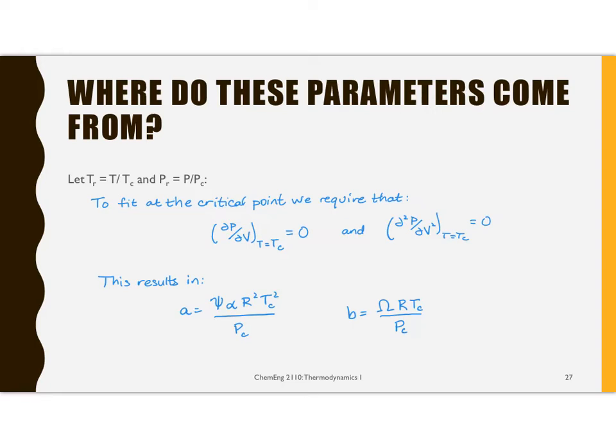And if you do this, if you look at dP/dV when T is the critical temperature, so this Tr is equal to 1, that needs to be 0, and the second derivative needs to be 0. Remember, at the critical point, we need to have those repeated roots, and this is a way of guaranteeing that. And if you do this, we end up with these solutions shown here.